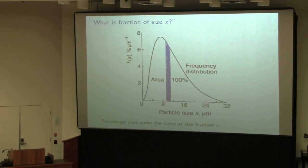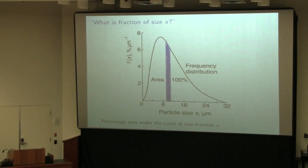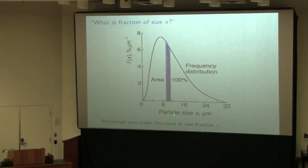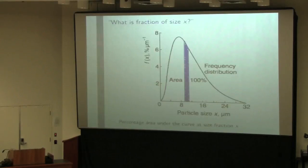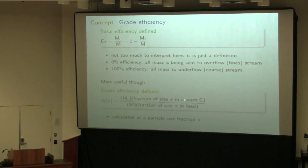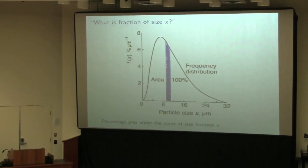Let me quickly recap what I mean by size fraction. Using a frequency distribution — the type constructed using sieves from the previous class — we can get a distribution of particle sizes for a given stream. The area under that curve is 1 or 100%. For a given region, the fractional area divided by the total area gives the fraction of particles of that size. We group them into discrete bins since we cannot work with every single size.